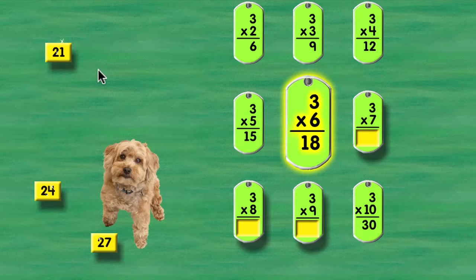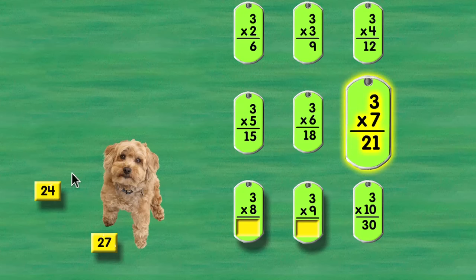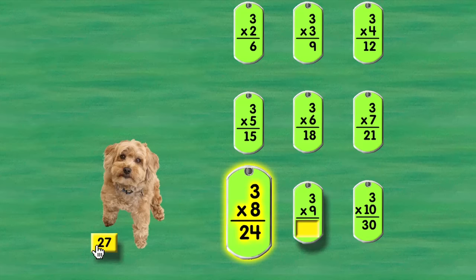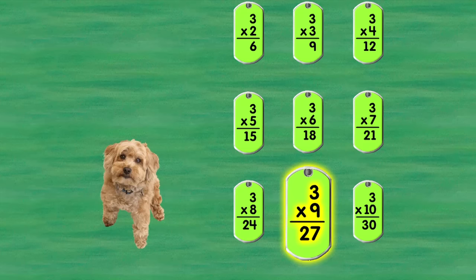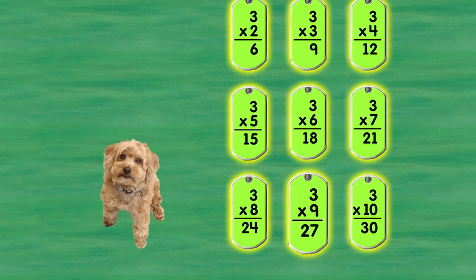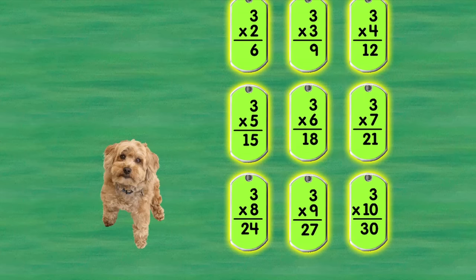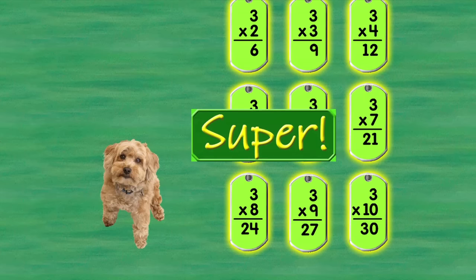3 times 6 is 18. 3 times 7 is 21. 3 times 8 is 24. 3 times 9 is 27. Super! Keep up the good work!